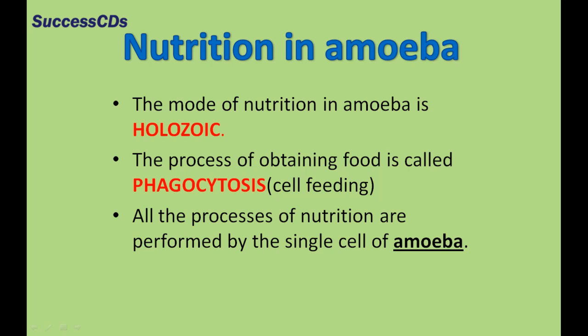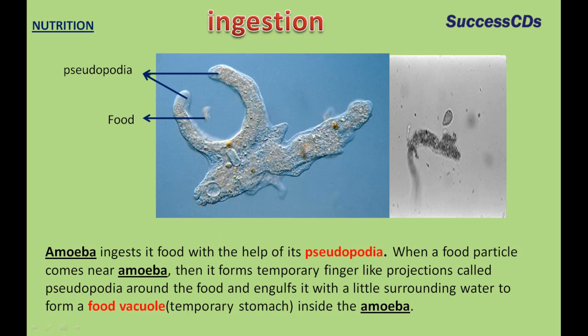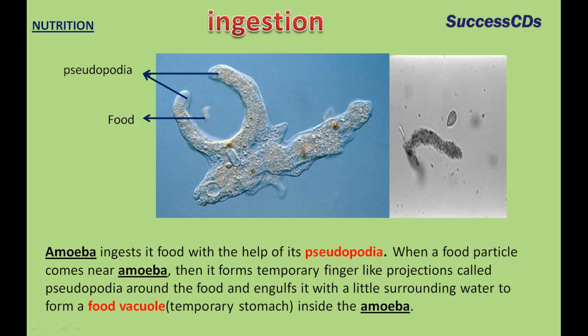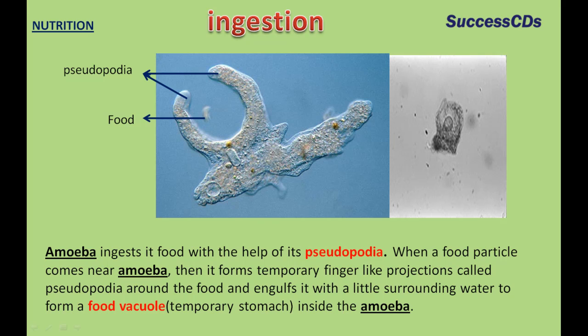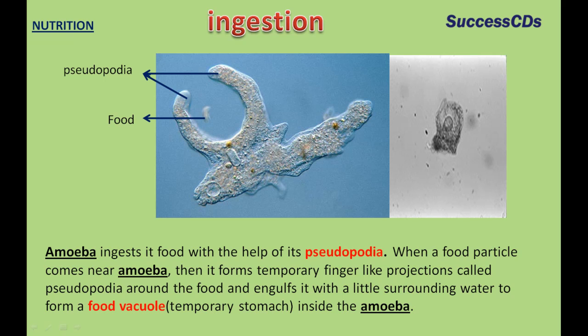The amoeba has a holozoic mode of nutrition. The process of obtaining food is called phagocytosis, that is, cell feeding. All the processes of nutrition are performed by the single cell of amoeba. Amoeba ingests its food with the help of its pseudopodia. When a food particle comes near the amoeba, it forms temporary finger-like projections called pseudopodia around the food and engulfs it with a little surrounding water to form a food vacuole inside the amoeba.